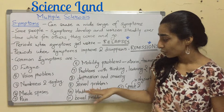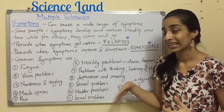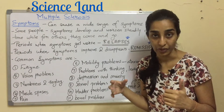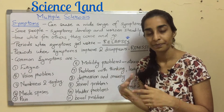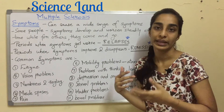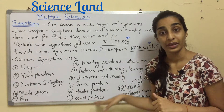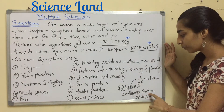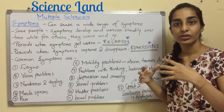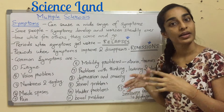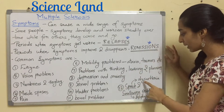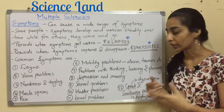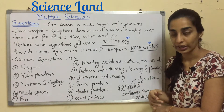Further symptoms include problems with thinking, learning, and planning — basically an inability to think rationally or logically — as well as depression and anxiety, sexual problems, and bladder problems such as difficulty emptying the bladder, frequent urination, or urge incontinence. There are also bowel problems like constipation, and speech and swallowing problems where speech is slurred, known as dysarthria, and chewing and swallowing difficulties, known as dysphagia.